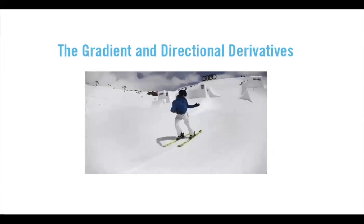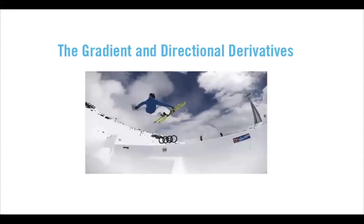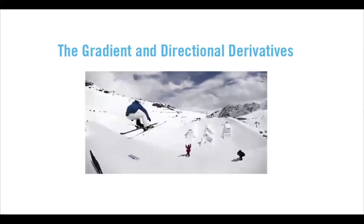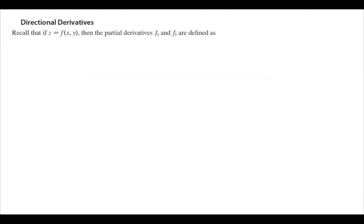The gradient and directional derivative. Recall that if z equals f of x and y is a function in two variables, then we define the partial derivatives of this function, f sub x and f sub y, using the limit definition.